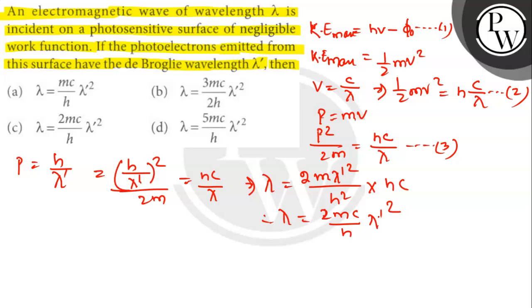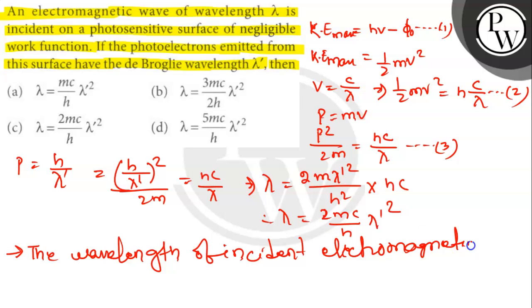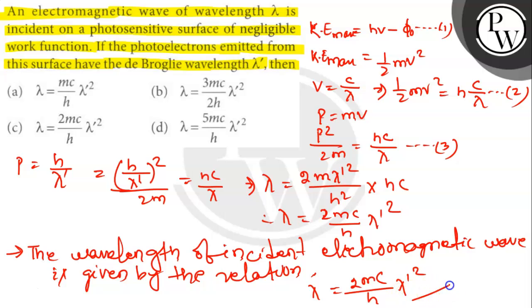Therefore, we found that the wavelength of incident electromagnetic wave is given by the relation λ = (2mc/h) × λ'². This is the answer. Option C is the correct answer. Thank you.